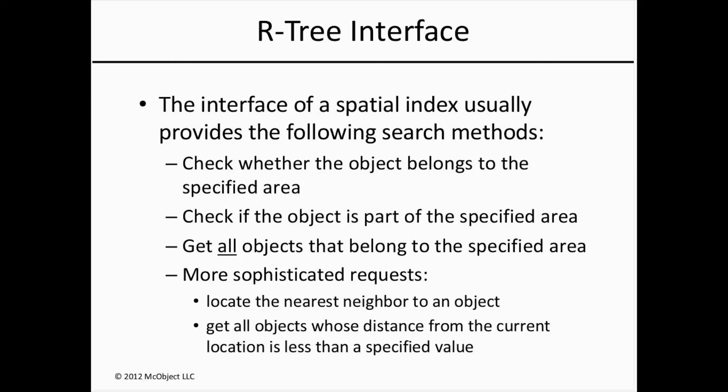The programming interface on an R-tree usually provides the following search methods: whether the object belongs to the specified area — more formally, whether the object's minimum bounding rectangle overlaps with the specified rectangle; or whether the object is wholly contained within the specified rectangle, not just overlaps; and get all objects whose minimum bounding rectangles overlap with the specified rectangle. These operations can be used to implement more sophisticated requests, for example to locate the nearest neighbor to an object, or to get all objects whose distance from the current location is less than some specified value.